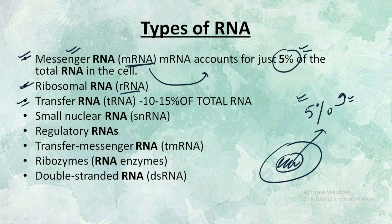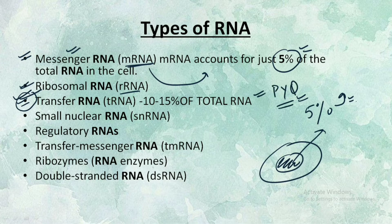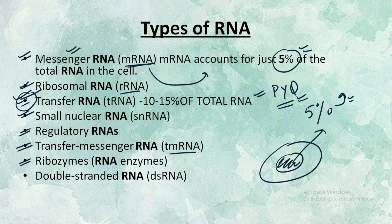The third type is transfer RNA, or tRNA, which accounts for 10 to 15 percent of total RNA. In this video we'll be dealing with the structure of tRNA in complete detail, because many questions have been framed from this area in previous years. At the end of this video we'll also solve a previous year question. Other types include small nuclear RNA (snRNA), regulatory RNAs, transfer-messenger RNA (tmRNA), ribozymes (RNA enzymes), and double-stranded RNA (dsRNA).